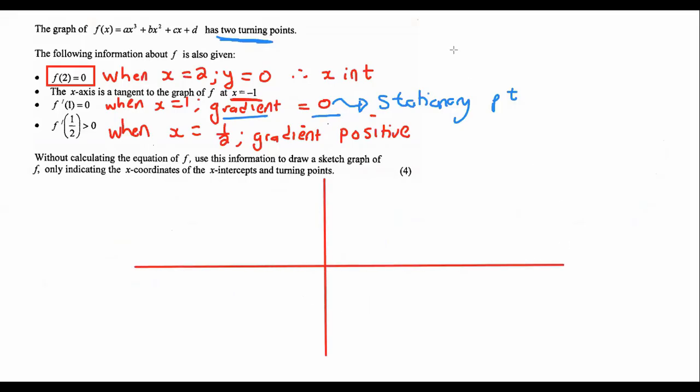And now we're literally just going to go fill in whatever we can. So they told us that when x is 2, y is 0. So when x is 2, y is 0. So that's going to be here. Perfect.